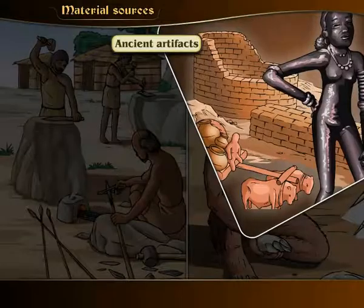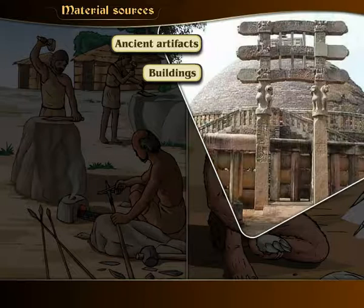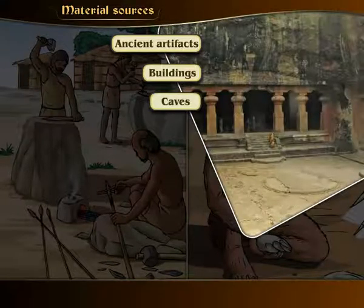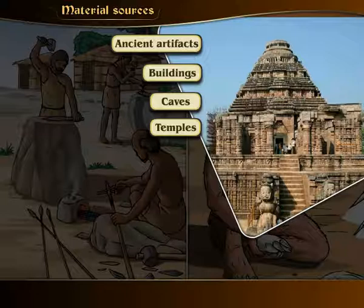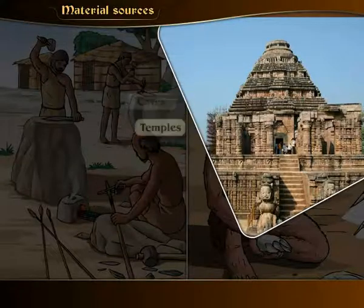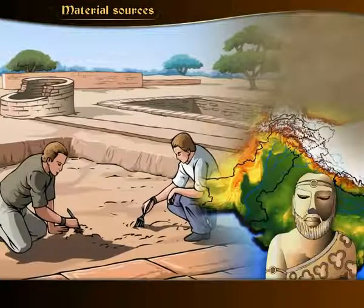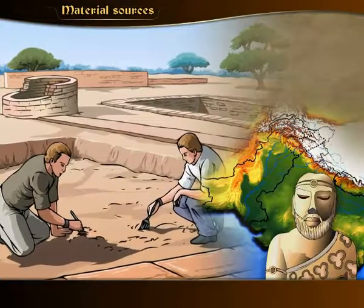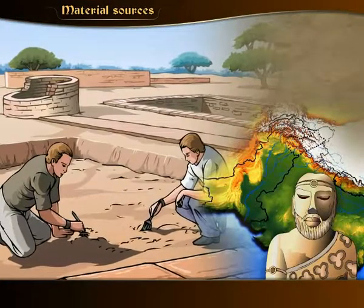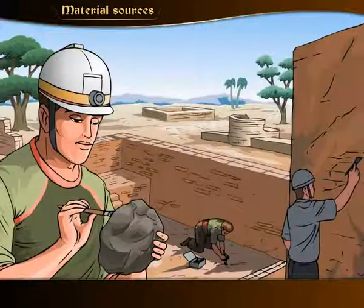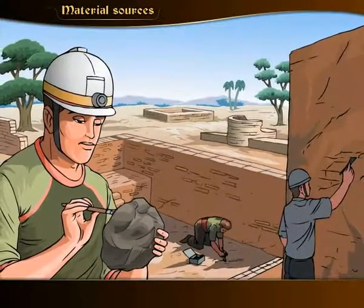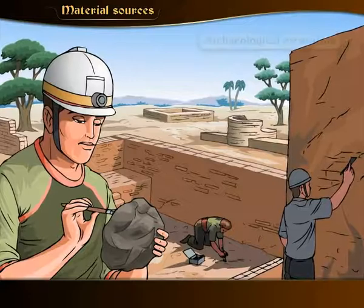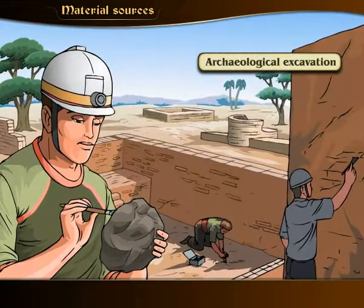Ancient artifacts, buildings, caves, and temples give us essential information about the periods when they were constructed. Some of the historical remains get buried under the ground due to earthquakes, floods or other reasons. Modern scientific methods are used to dig them out undamaged. This is known as archaeological excavation.